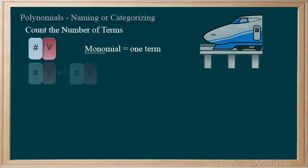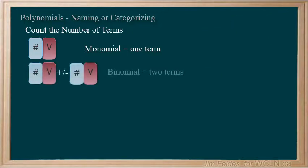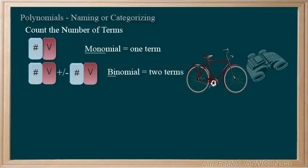When there are two terms, we use the prefix bi, as in bicycle, or binoculars.